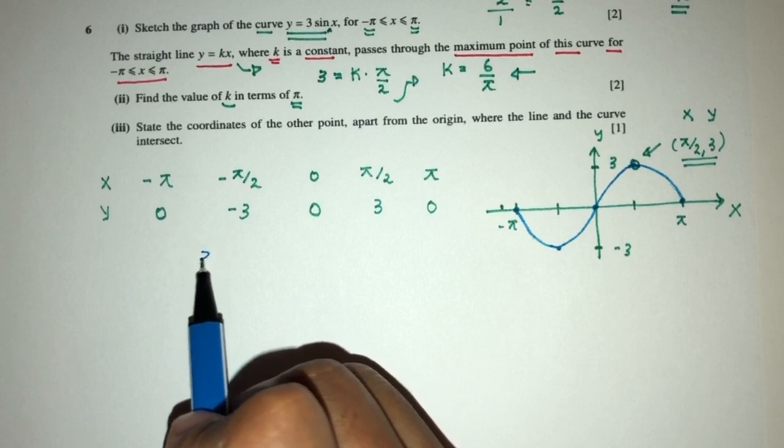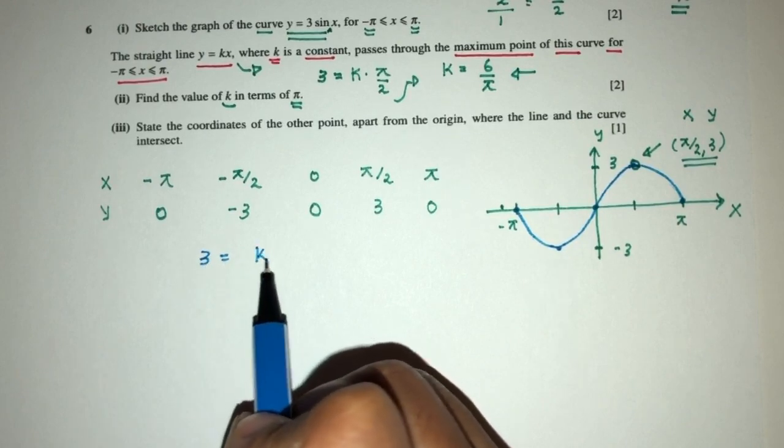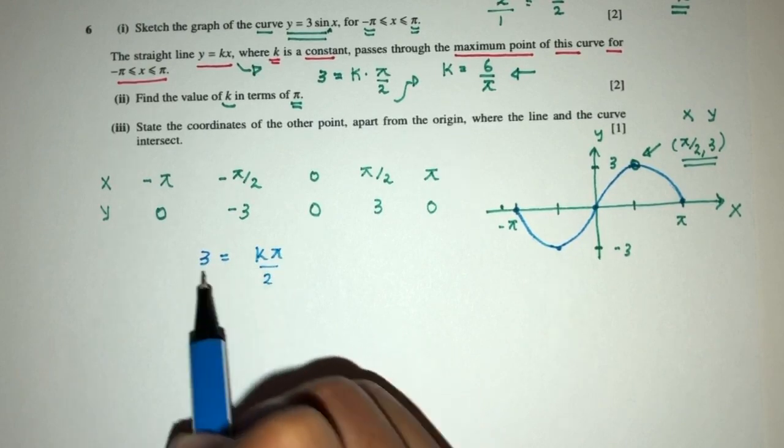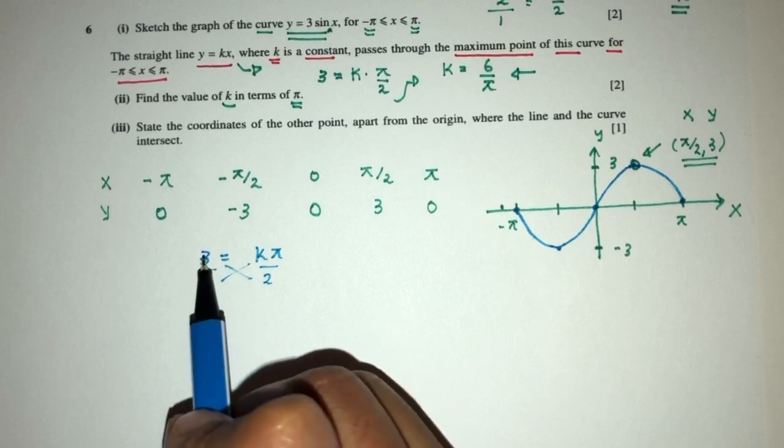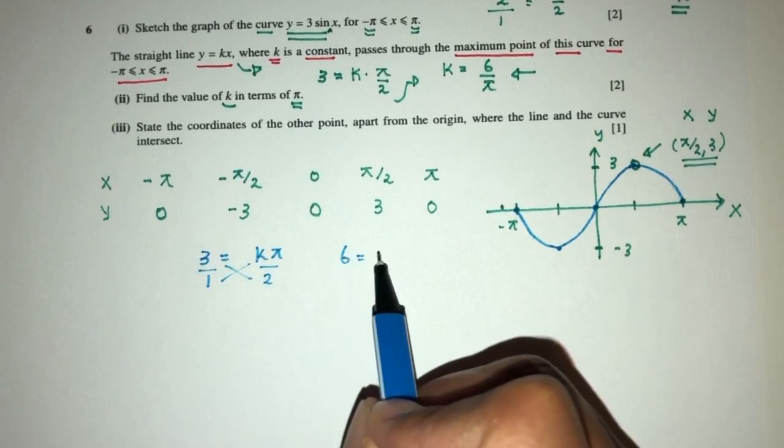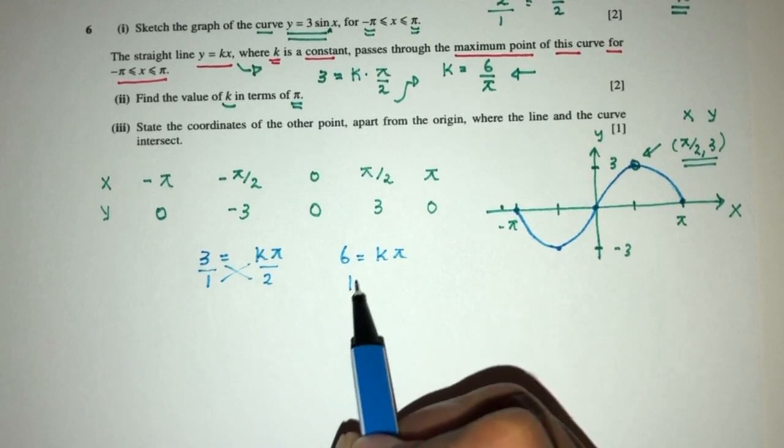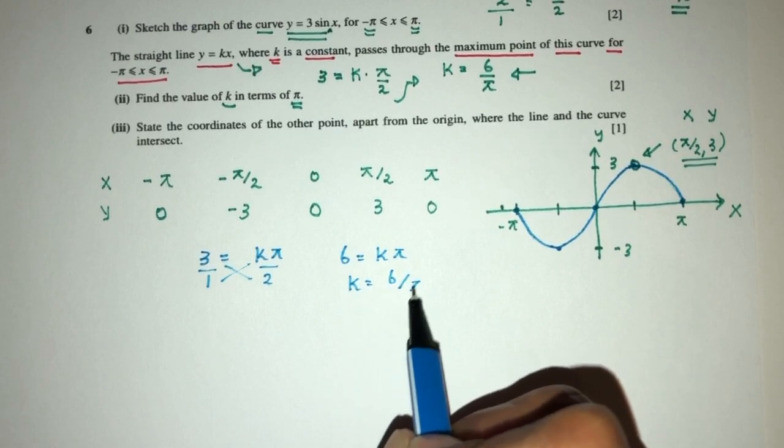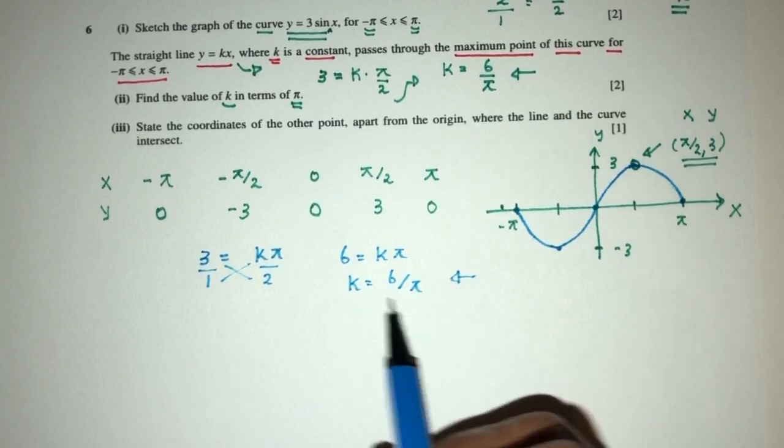So let me simplify this if you guys don't understand. So we have 3 equal to k pi over 2. We can just cross multiply. So 3 times 2 is 6, and then we have k pi. So k have to be 6 over pi. In terms of pi, the value of k will be 6 over pi.